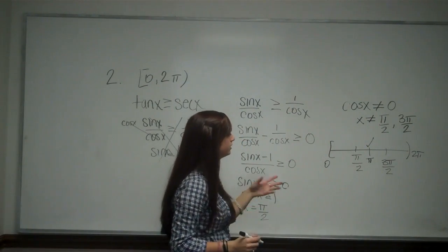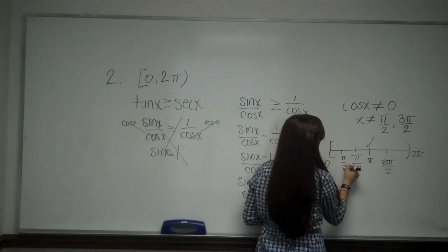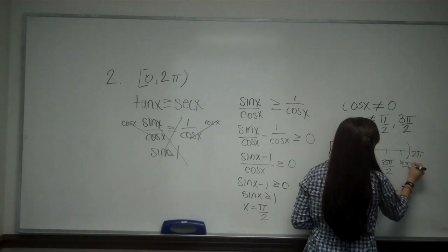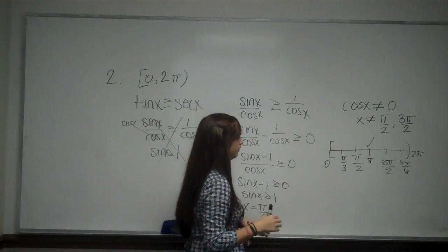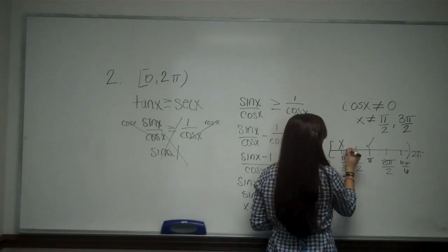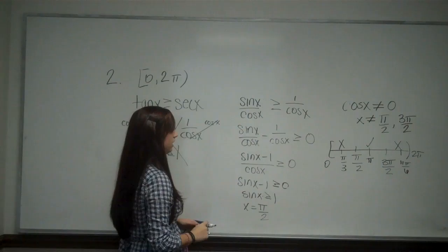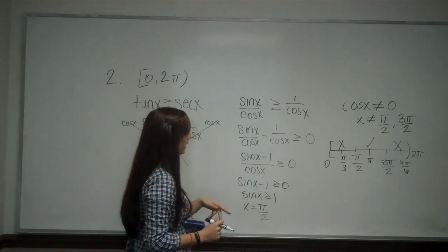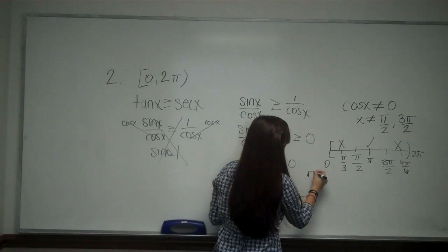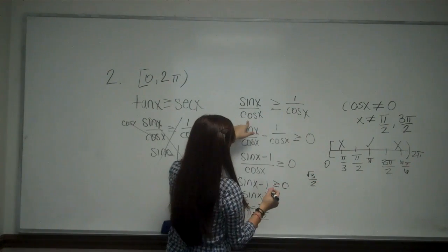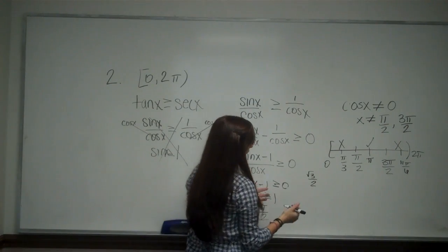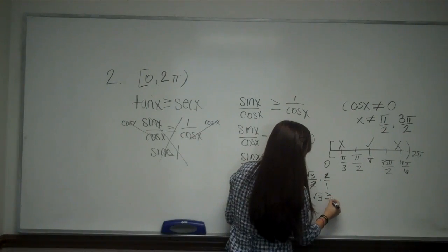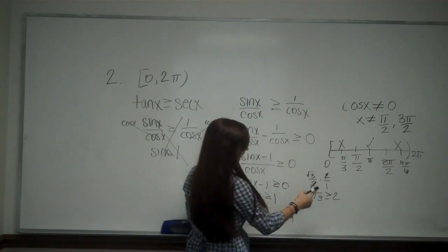When I plug my other two sections, say if I were to plug in pi over three here or eleven pi over six, whichever numbers you feel comfortable with, you're going to find out that this section doesn't work and that section does not work. Because when I plug in pi over three, sine of pi over three is square root of three over two, and cosine of pi over three is one half. So I'm going to times this by two over one and you get square root of three is greater than or equal to two, and that is not the case. So that's why it doesn't work and same thing why that one's not going to work.